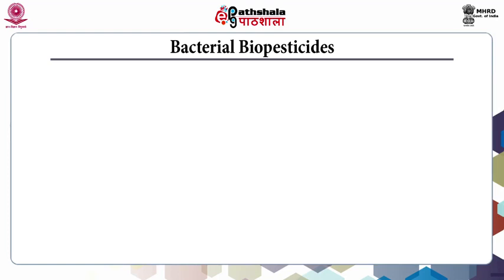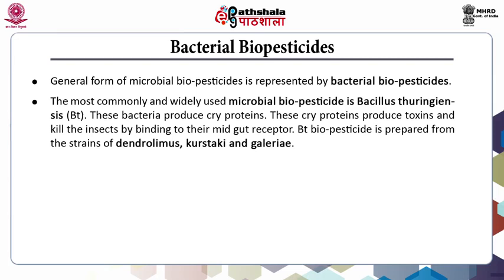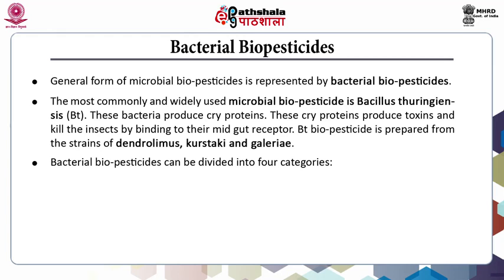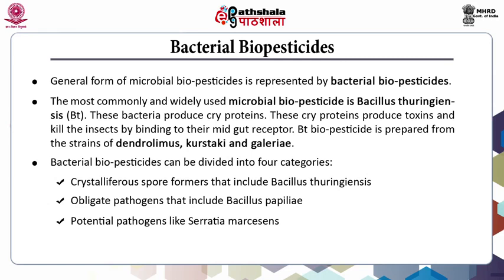The first subdivision of microbial biopesticides is bacterial biopesticides. The most commonly used microbial biopesticide is Bacillus thuringiensis. These bacteria produce cry proteins, which produce toxins and kill insects by binding to their mid-gut receptor. BT biopesticides are prepared from strains of Dendrolimus, Kutskaki, and Galleriae. Bacterial biopesticides are further subdivided into four categories: crystalliferous spore formers including Bacillus thuringiensis; obligate pathogens including Bacillus papillae; potential pathogens like Serratia marcescens; and facultative pathogens like Pseudomonas aeruginosa.